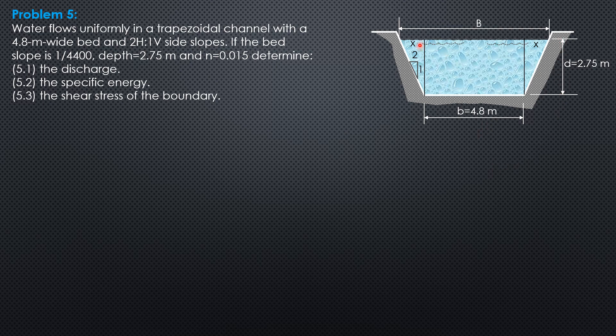So from the figure, x as to 2 equals 2.75 as to 1. And the formula is area over n hydraulic radius to the 2 thirds slope to the 1 half for the discharge. So x as to 2 equals 2.75 as to 1. Therefore, x is 5.5 meters.